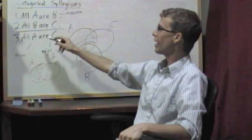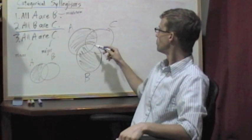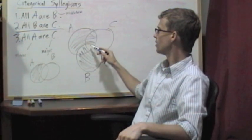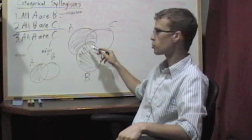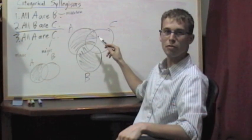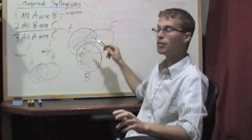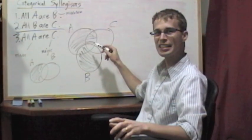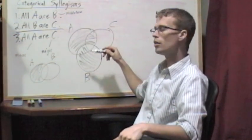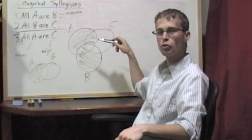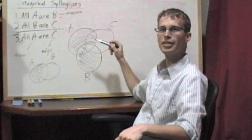So all A are C. Well, let's see, that area, the only area left open in the A circle, is also in the C circle. So it looks like anything that's an A does have to be a C. So there's no way for the premises to be true while the conclusion is false.